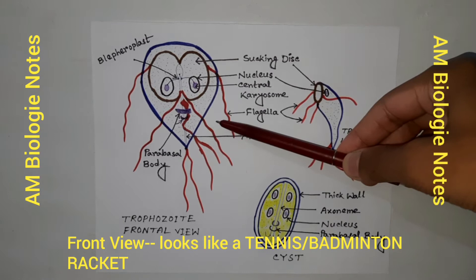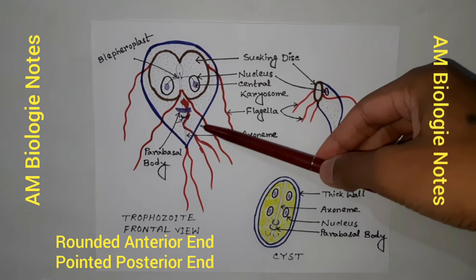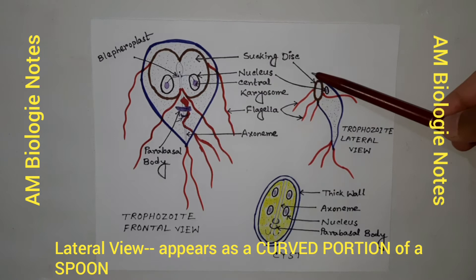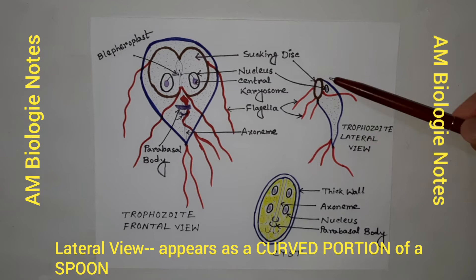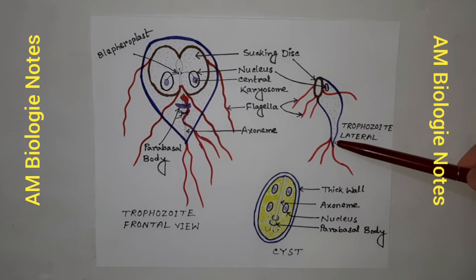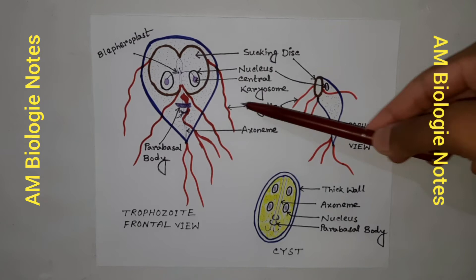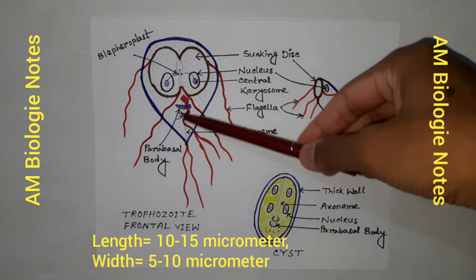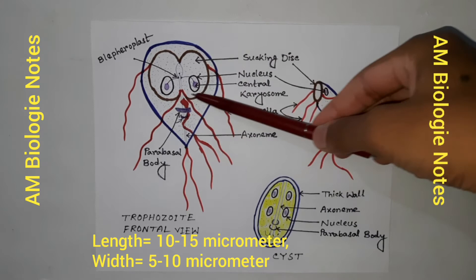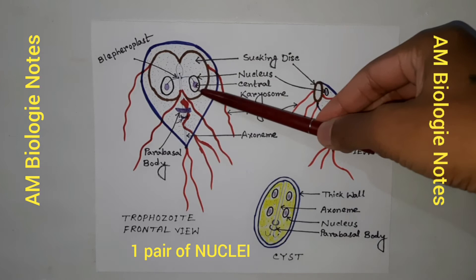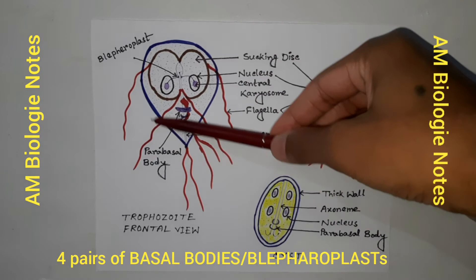The anterior end is rounded and the posterior end is pointed. When viewed laterally, it appears as a curved portion of a spoon. The dorsal surface is convex and the ventral surface is concave, with a sucking disc. The trophozoite is bilaterally symmetrical. It measures 10 to 15 micrometers in length and 5 to 10 micrometers in width.